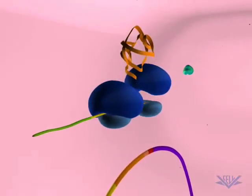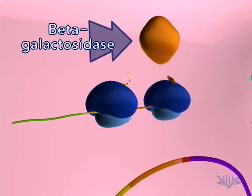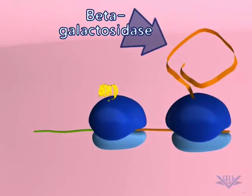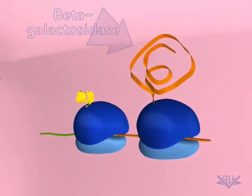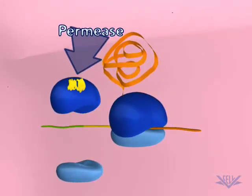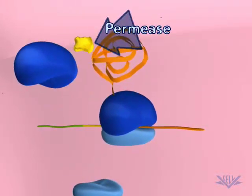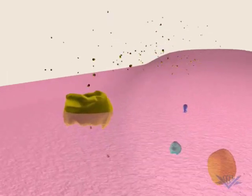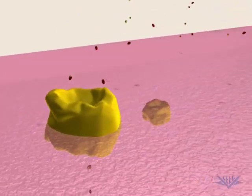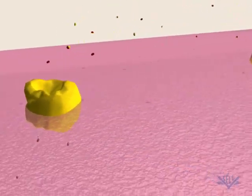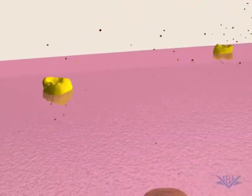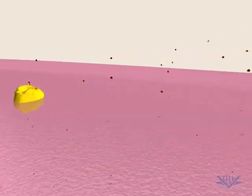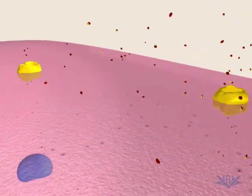The first protein is beta-galactosidase, which breaks down lactose into two simple sugars. The second protein is permease, a membrane-bound protein. When embedded in the cell membrane, permease functions to provide a direct route for the lactose outside the cell to be imported into the cell.